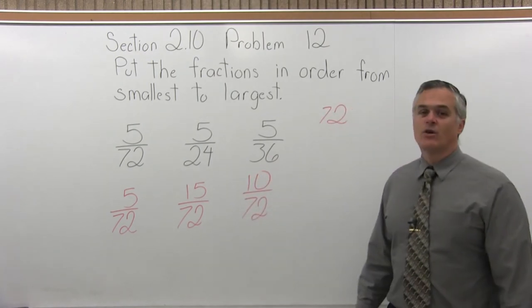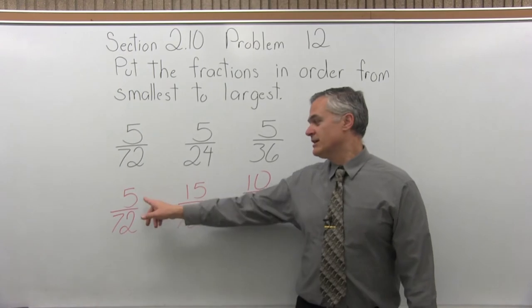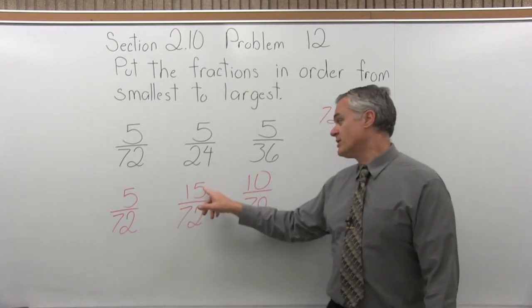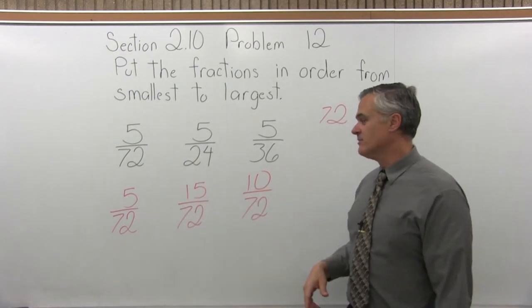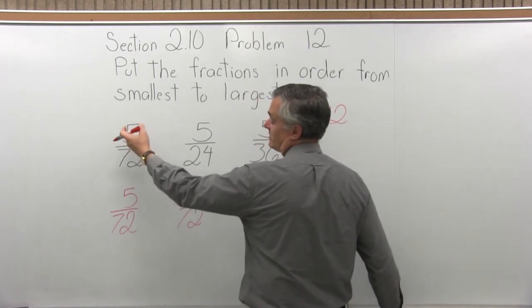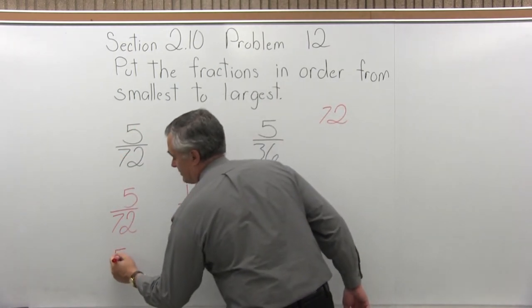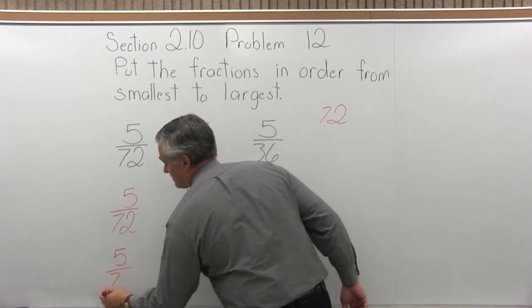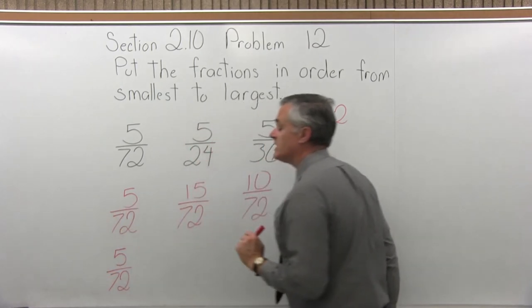Now that they're all over 72, clearly the 5 over 72 is smaller than the 15 or the 10 over 72. So the first fraction, the smallest one, is 5 over 72. And that was the form it was in originally. So it can just stay where it is. It comes first. It's the smallest, 5 over 72.